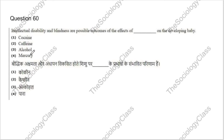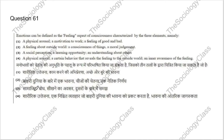Question 60: Intellectual disability and blindness are possible outcomes of the effects of what? Options: cocaine, caffeine, alcohol, or mercury. The correct answer is D — mercury.